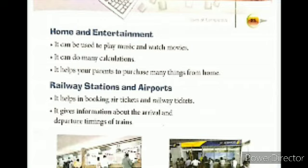The next is railway station and airport. Computers are used at railway stations and airports to book air tickets and railway tickets. It also gives information about the arrival and departure timing of the train. As we can see, there are two pictures given. In both pictures, passengers are standing and want to purchase tickets. At the ticket counter, the person sitting there generates the ticket through the computer, tells the amount to pay, and gives them the arrival timing.